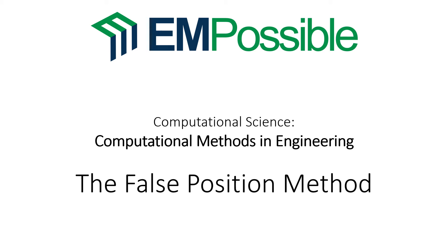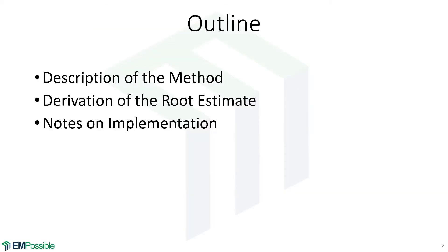The false position method. In this lecture, you're going to discover that the false position method is essentially the bisection method. We just make a better calculation of where the root might be than just bisecting the upper and lower bounds. We'll derive the equation that estimates the position of the root better than the bisection method, and finish with some notes on the implementation of the false position method.